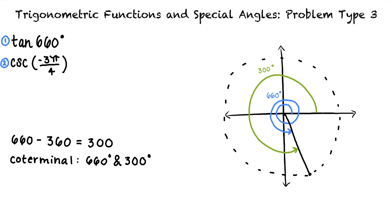And, if you compare this angle to a 300 degree angle, you can see that they are terminal in the same location, and therefore coterminal. Okay, now that we know that 300 degrees is the coterminal angle, what do we do next?